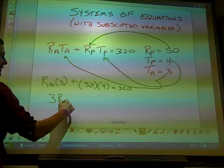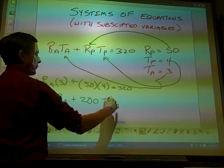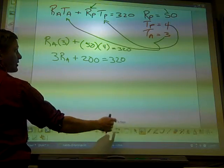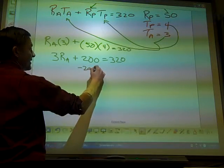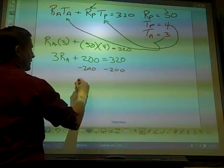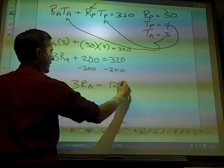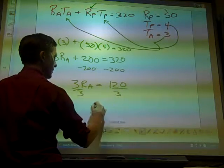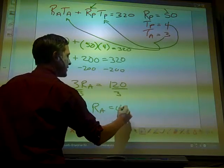I'm left with what? 3R_A plus 200 equals 320. So now it's a simple equation, one equation one unknown. Minus 200, 3R_A equals 120. Divide. R_A is 40.